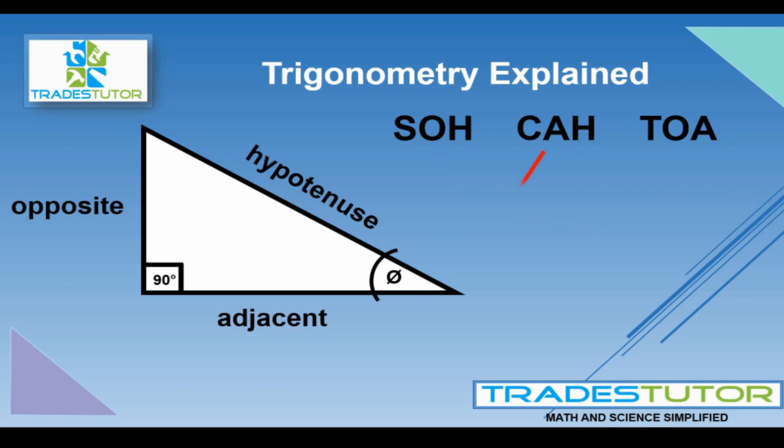The CAH, well that refers to the cosine. And that's the relationship between the adjacent and the hypotenuse. So if you know those two, you can find the angle between the two of them.